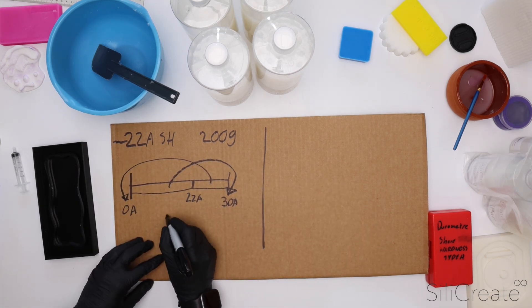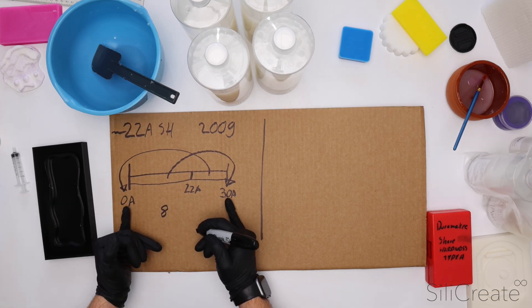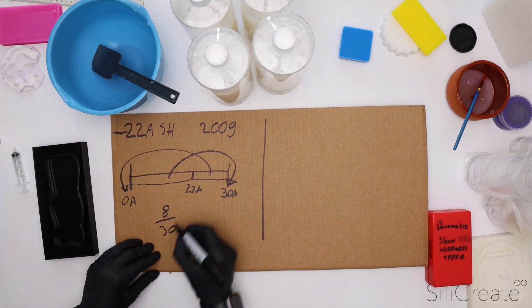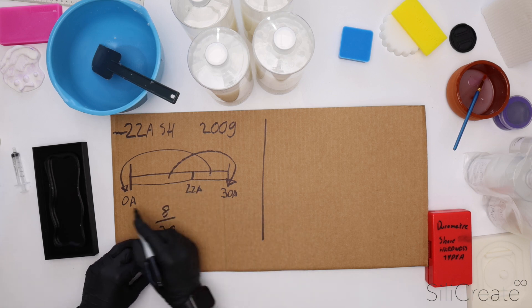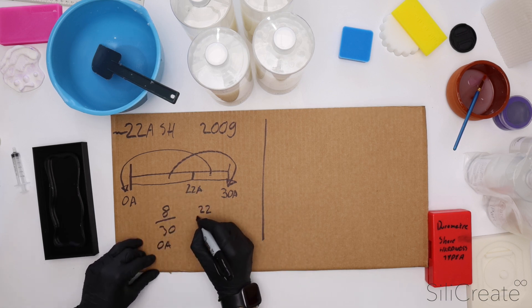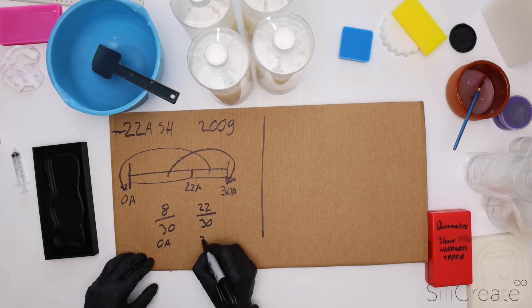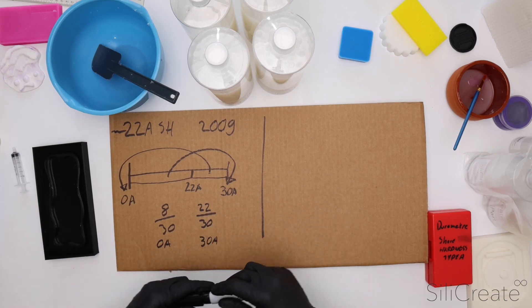30A minus 22 is 8, over the total range in the number line is 30. This will be for our 0A. For our 30A it's going to be 22 over 30, and that's for our 30A. We can kind of just multiply these all together.